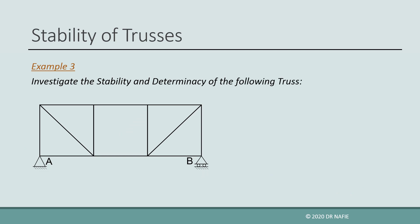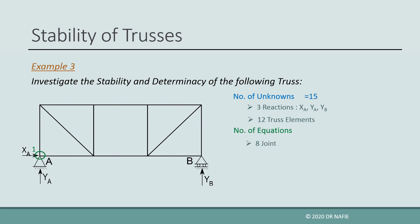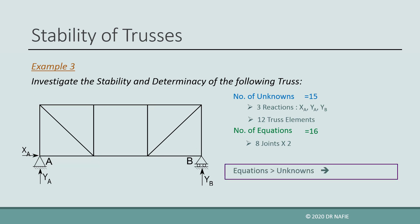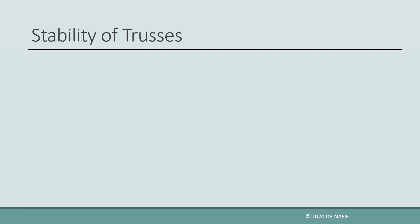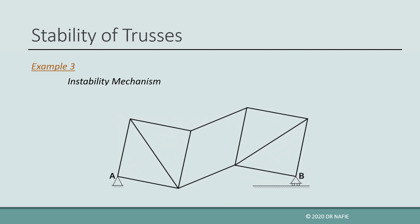Let us look at another example. For the truss shown, the number of reactions is 3 and the number of truss elements is 12, so the total number of unknowns is 15. The number of joints is 8, giving 16 equilibrium equations. For this truss, the number of equilibrium equations is greater than the number of unknowns, so the truss is definitely unstable. The instability can be visualized by the failure mechanism generated due to a horizontal force at the top left corner.